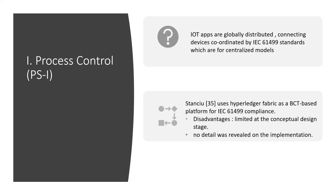Process control: devices communicate in the network and their tasks are coordinated by process definitions. The IEC 61499 standard is developed to control distributed systems by defining requirements for inputs, outputs, and algorithms. To address this, ongoing research by Stanshu reported their study using Hyperledger Fabric as a blockchain-based platform for IEC 61499 compliance. However, the work was limited to the conceptual design stage and no detail was revealed on the implementation.